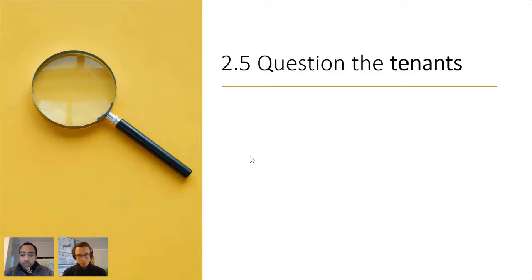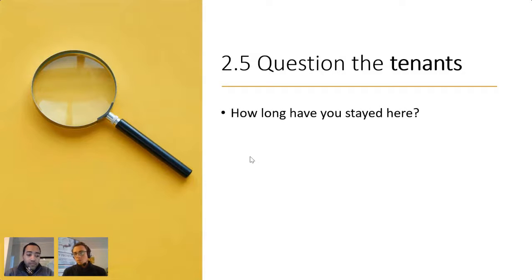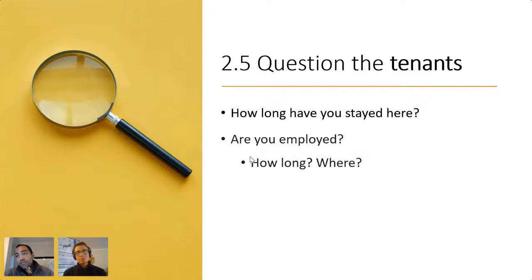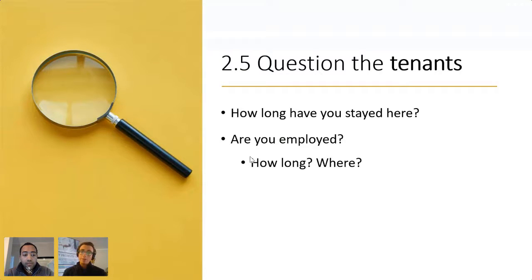Number five of your due diligence process is questioning the tenants. When looking at a rental property, ask things like: how long have you stayed here? That gives you a sense of whether they plan to stay or if they've been a good tenant. If they've been there five, six, or seven years and you can see bank statements showing regular on-time payments, that's a good tenant and you can de-risk your numbers. Ask if they're employed, for how long, and where — maybe phone the employer to verify their salary can justify the rent.